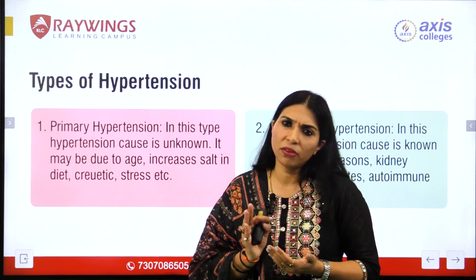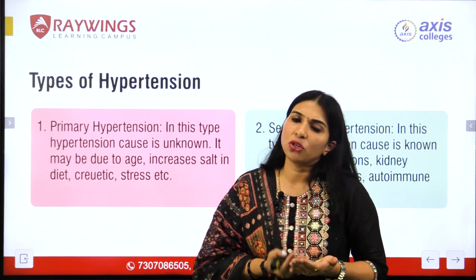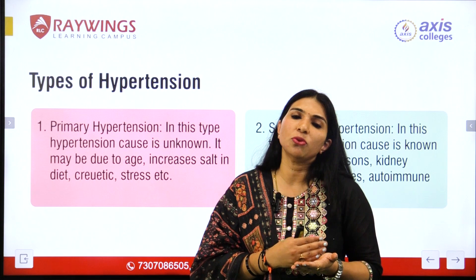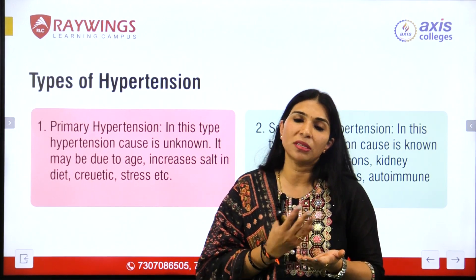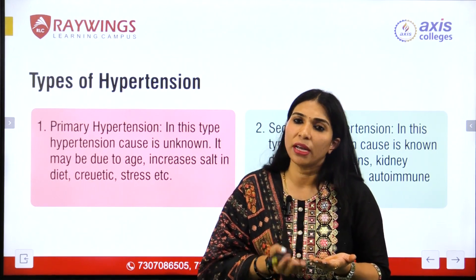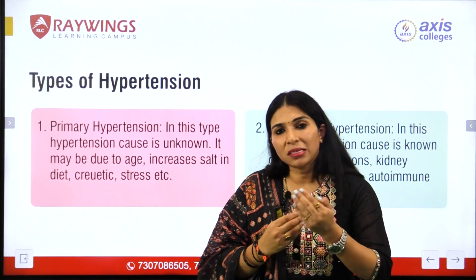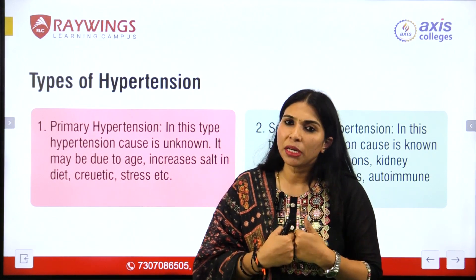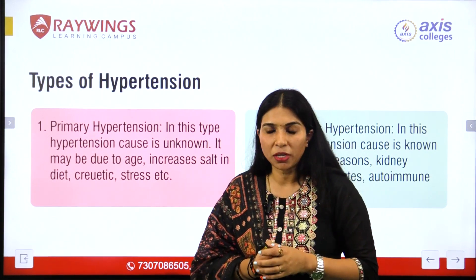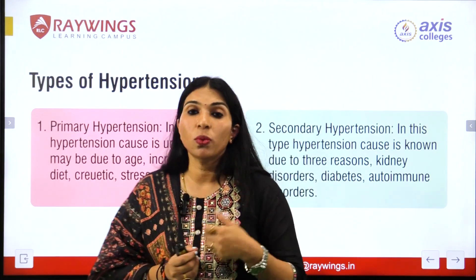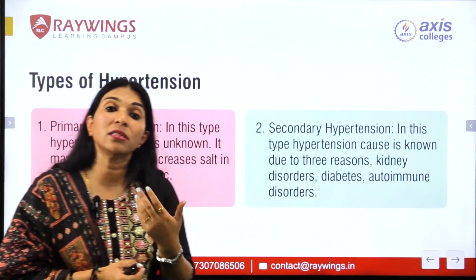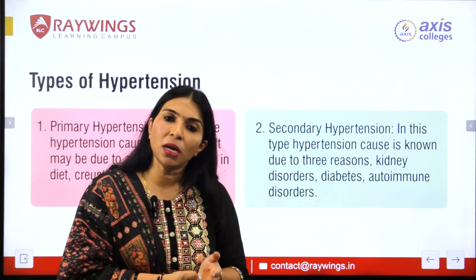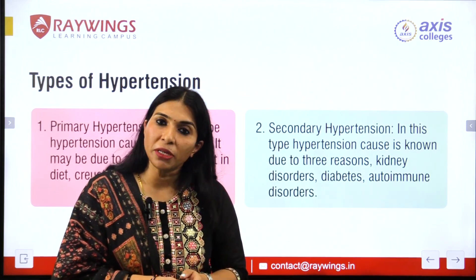In primary hypertension, the reason is unknown — we are not aware why the condition has arisen. It may be due to stress, genetics, lifestyle, sleeping habits, etc. When the reason is not known, that is classified as primary hypertension.